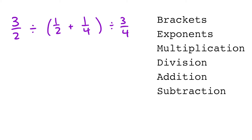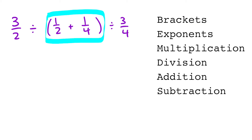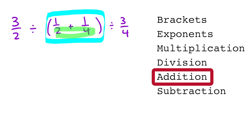Working our way through BEDMAS, we've got to do the inside of the brackets first. So our first step here is going to be to do one half plus one quarter. Now in order to do this, we need to have the same denominator for both of these two terms.